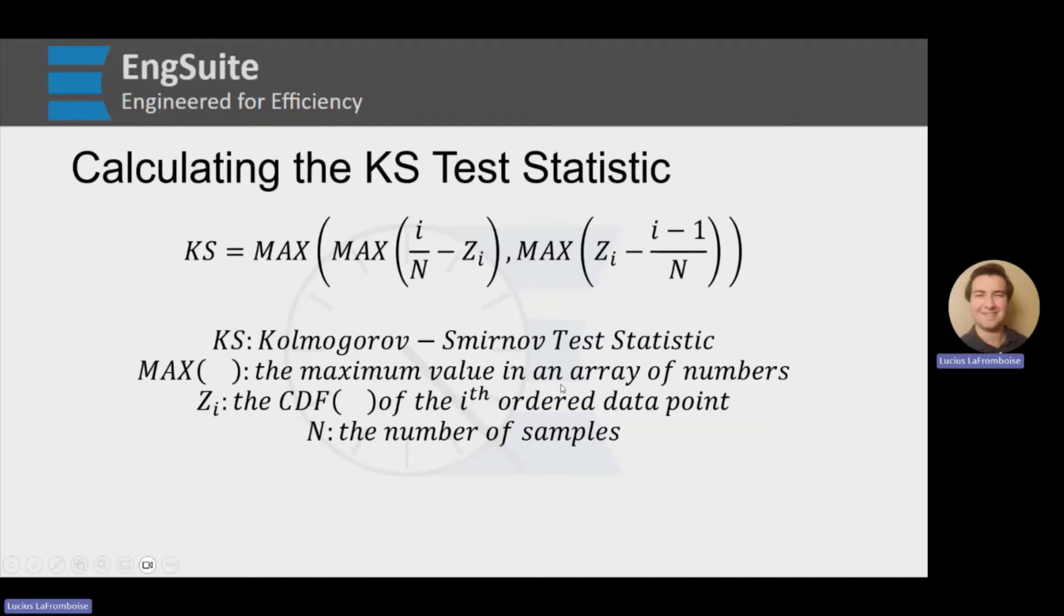Max is the maximum value of an array of numbers, and ZI is the CDF of the i-th ordered data point. N is the number of samples, like usual.